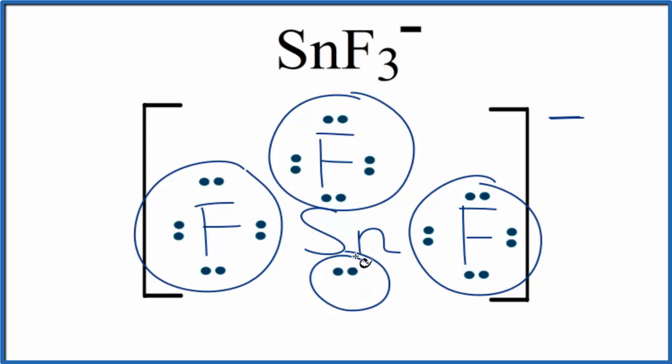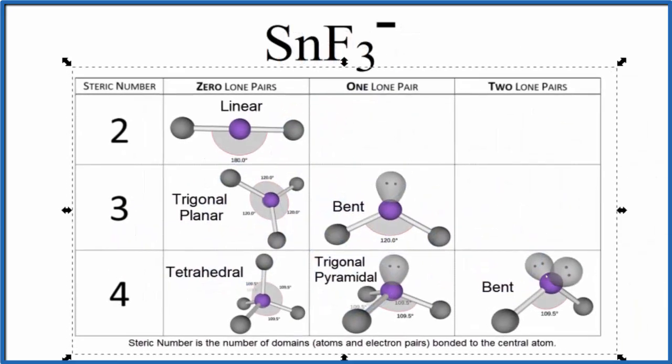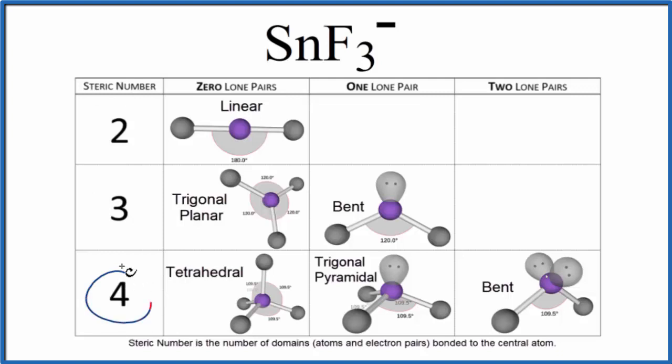So let's check that on our table here. So we have steric number of 4 with 1 lone pair. Come over here and we have trigonal pyramidal. The bond angle will be around 109.5. Probably not exactly since we have these fluorine atoms here.